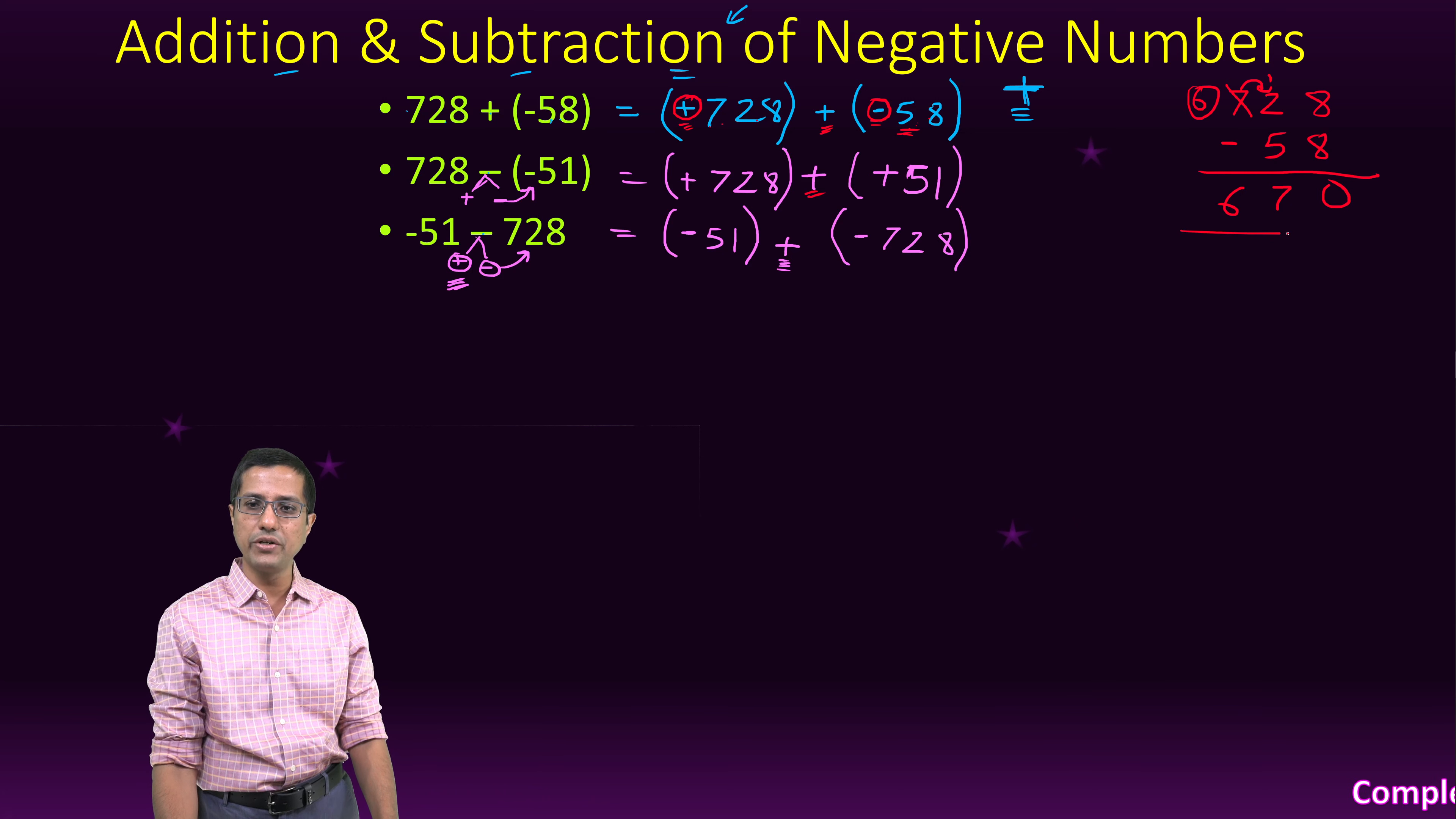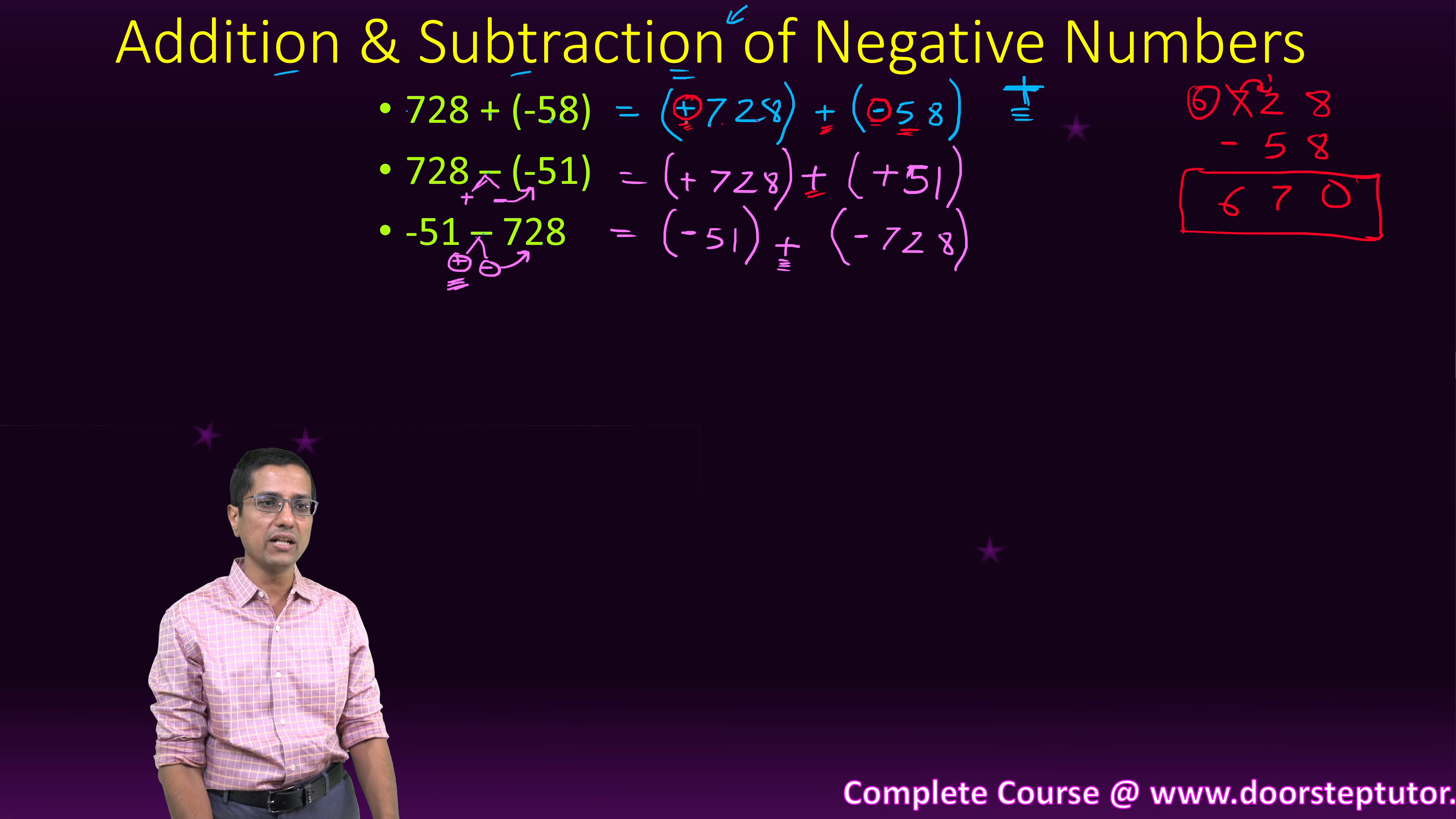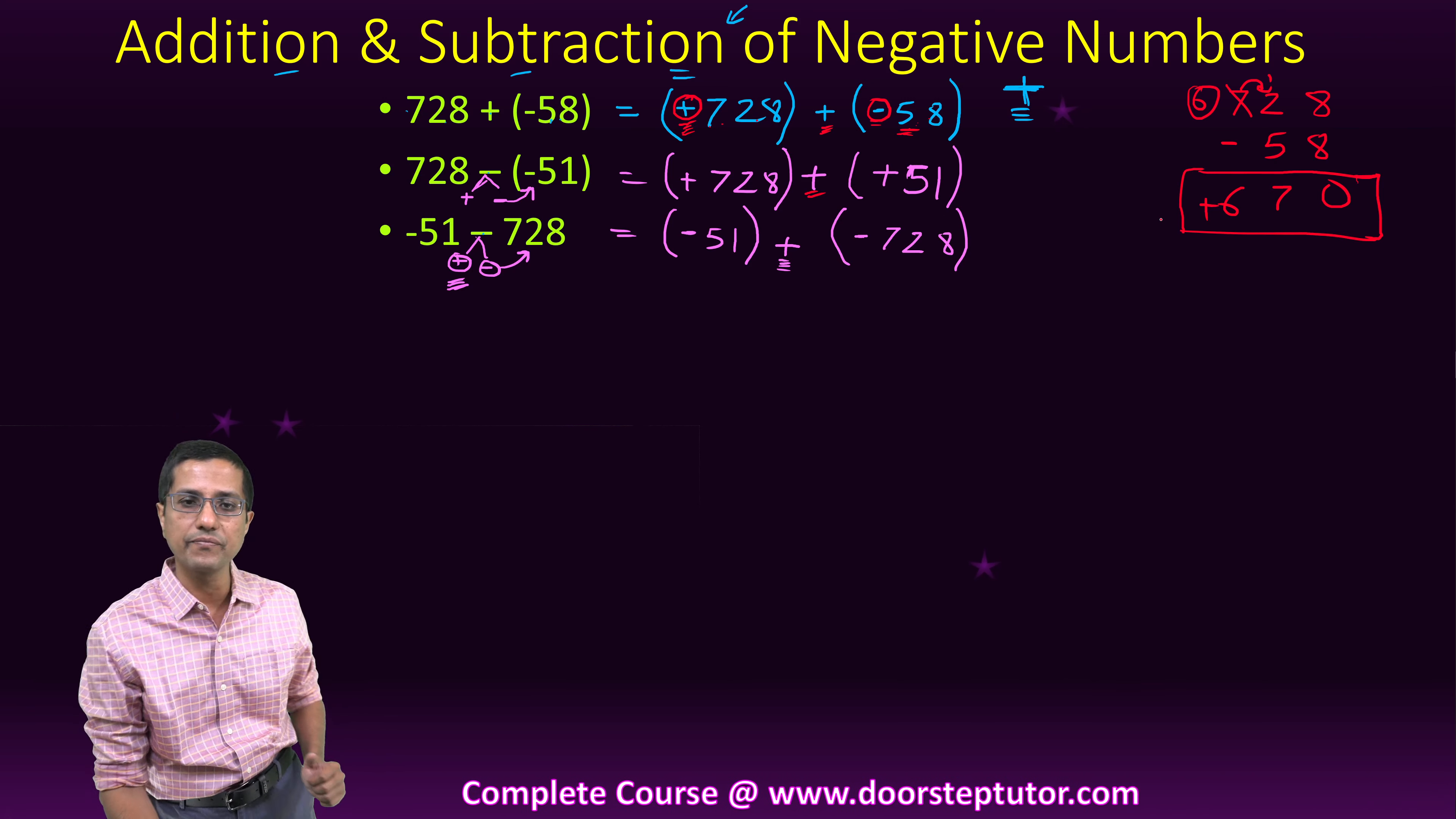We do the subtraction. And we take the sign from the larger number. So this becomes plus 670.